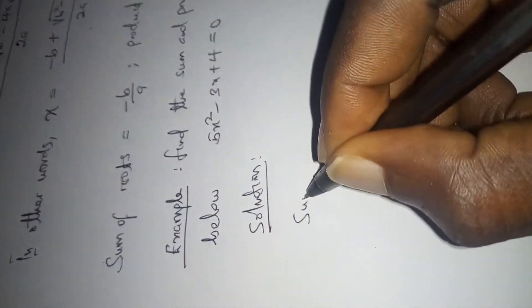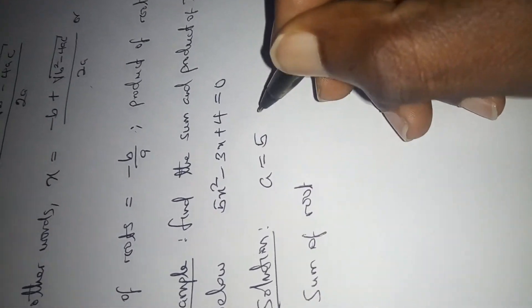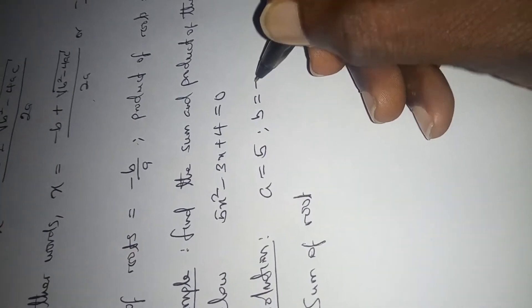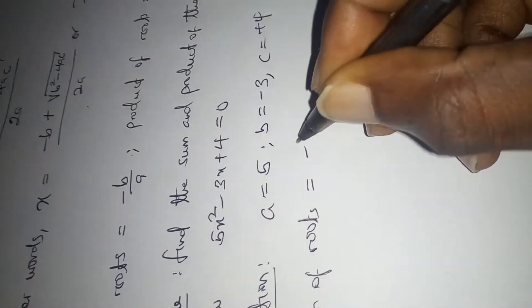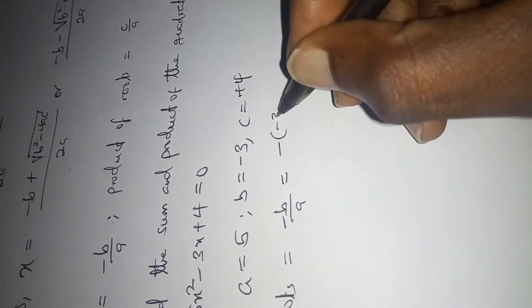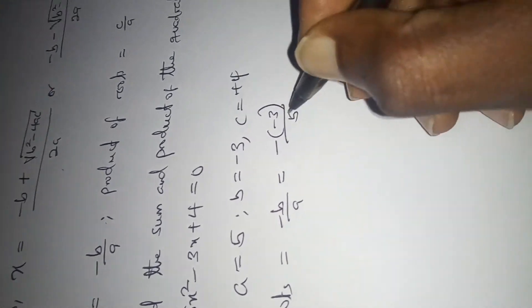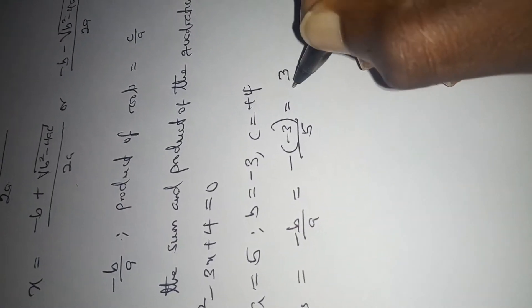Sum of the root, you have to identify the parameters. A is 5, B is minus 3, C is plus 4. So sum of the root is minus B over A, which equals minus open bracket minus 3 over 5. This is minus times minus, plus 3 over 5.